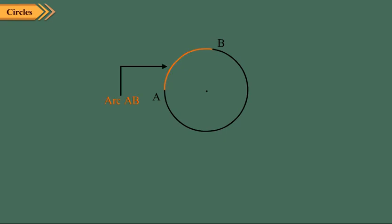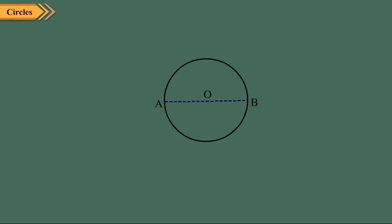We write it as arc AB. A diameter of a circle divides it into two equal parts. Each part is called a semicircle.